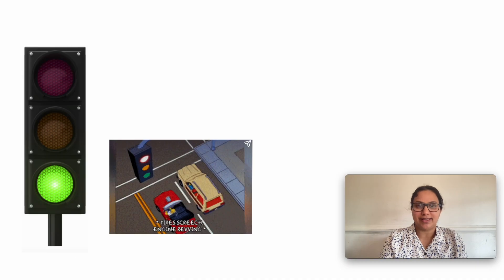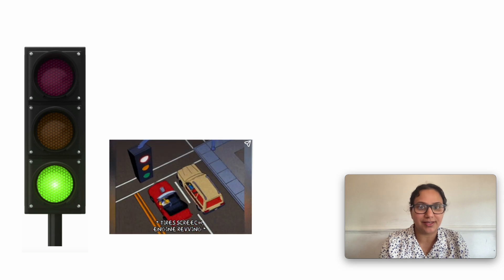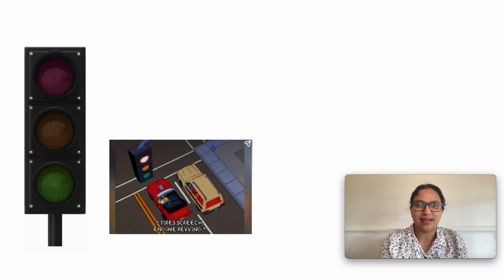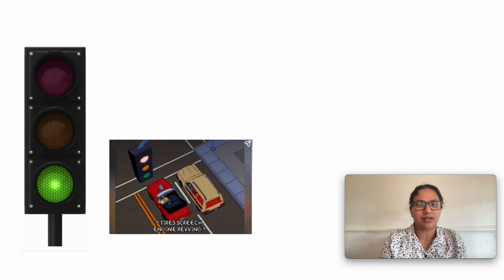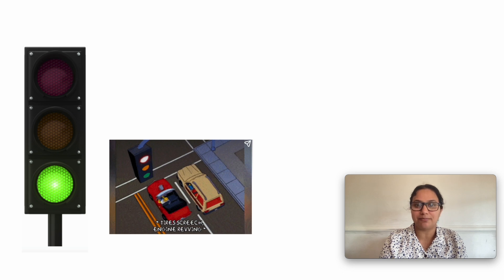Let me give you one example. Suppose you are a passenger in a car and it stops at a red light. When the light changes to green, the driver steps on the accelerator. As a result, the car speeds up or accelerates. In everyday life, acceleration means the process of speeding up.